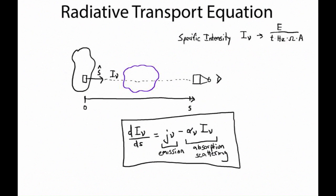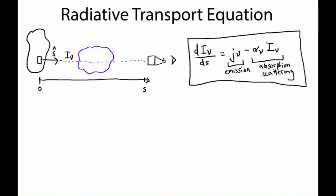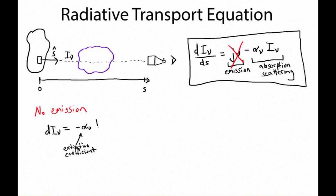The radiative transport equation is saying that any change in specific intensity as we travel along this line is a function of the emission we pick up along this line minus the absorption as it passes through the medium. Let's examine a simple case: the absorption-only case with no emission. The equation simplifies to the change in I-sub-nu being equal to the product of alpha — the extinction coefficient — times the specific intensity at each point, times the change in distance ds.